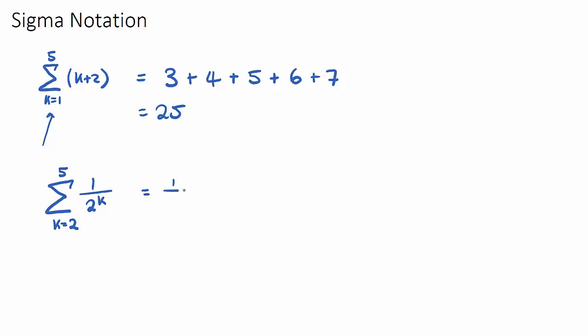So we're going to get 1 over 2 to the power of 2. So 1 over 2 squared, and then sum, and then we have k equals 3. It'll be 1 over 2 to the power of, now k is 3, plus 1 over 2 to the 4, and we stop once k is our top number. So plus 1 over 2 to the 5.